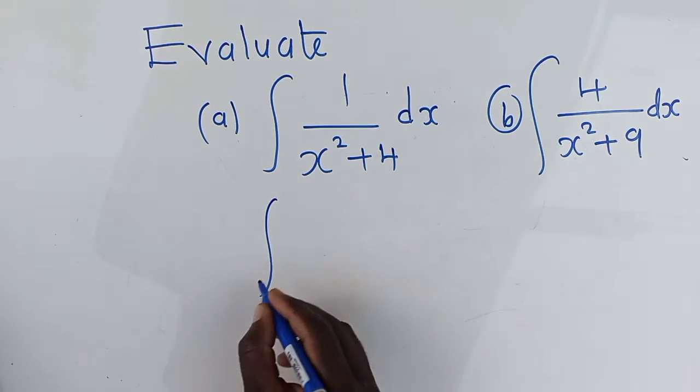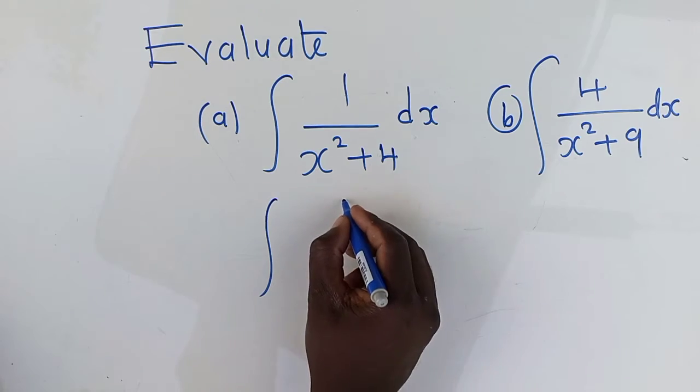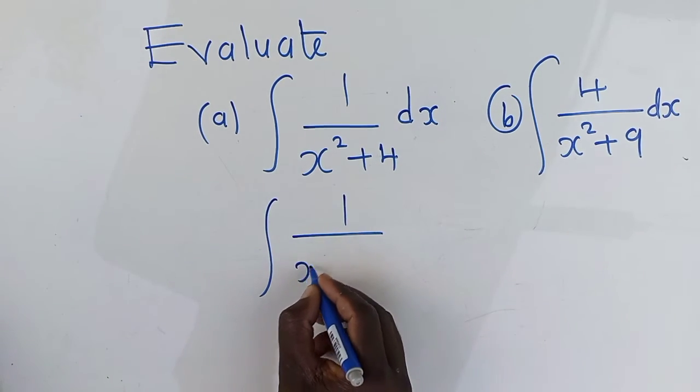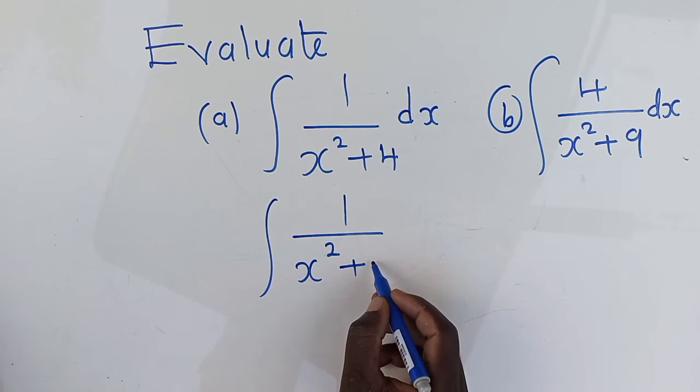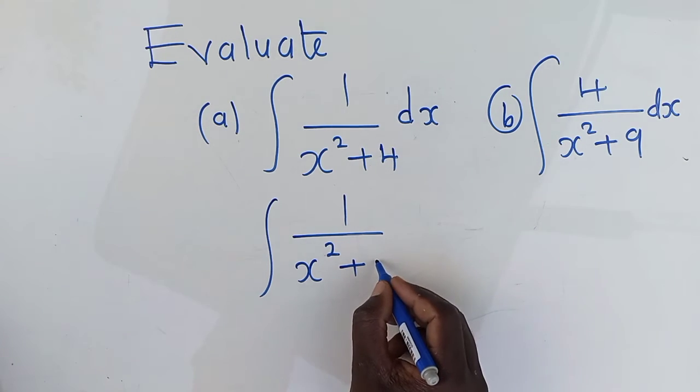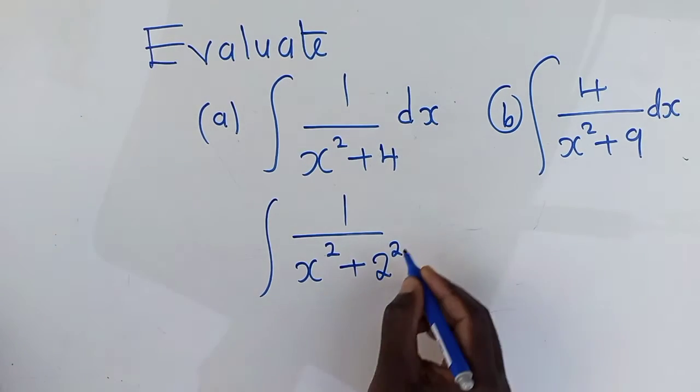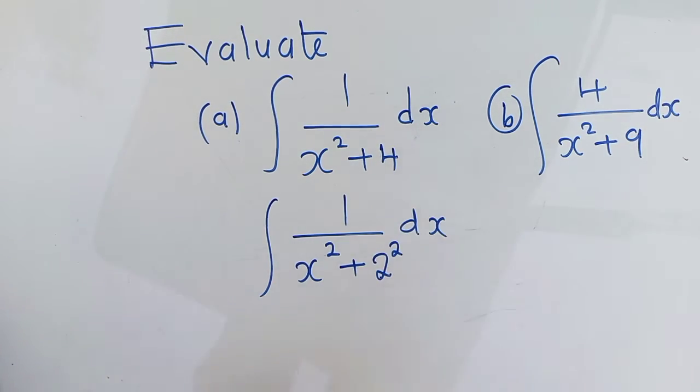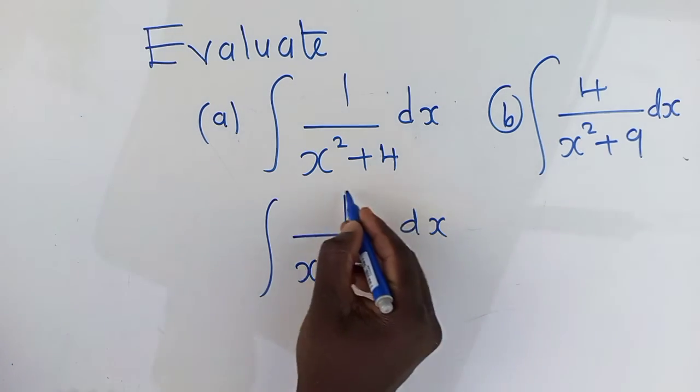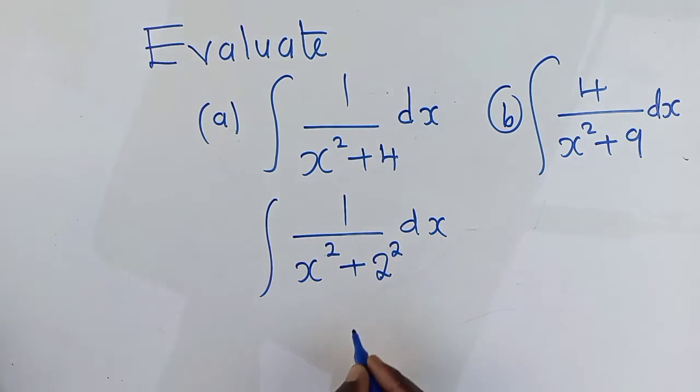So here, we are going to say integral 1 over x power 2. Remember, the formula has got a power 2 down here. So, we are going to say 2 power 2 under dx. We know that 2 power 2 is the same as 4. So now, when you see it in this manner, we can apply the arc turn.